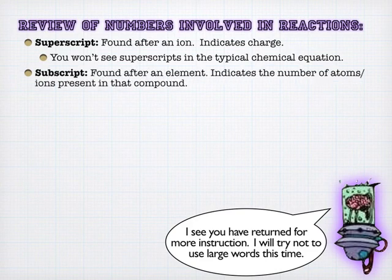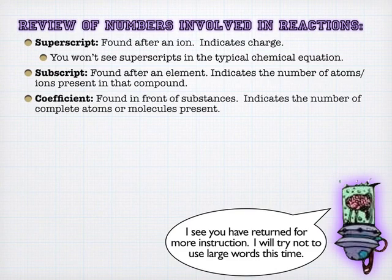You will see a lot of subscripts. Of course, subscripts are found after an element or after a polyatomic to indicate the number of atoms or ions present of that ion in the compound. And finally, the coefficient is going to star in balancing equations. This will be what you're able to manipulate to make sure that the number of atoms on the left and the right-hand side of the equation remain the same. You won't be able to change subscripts because that will change the compounds involved.